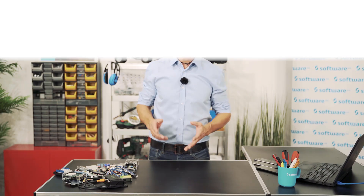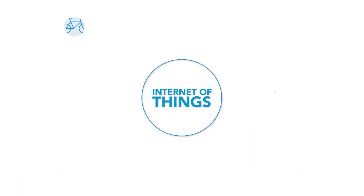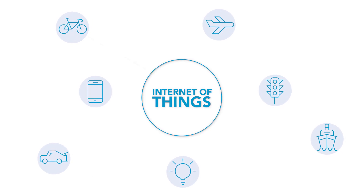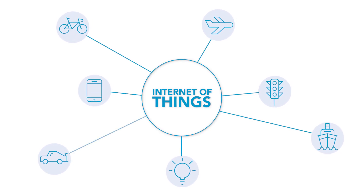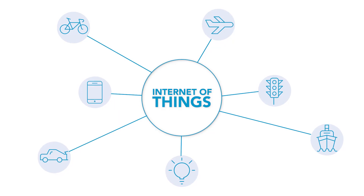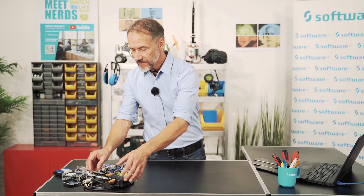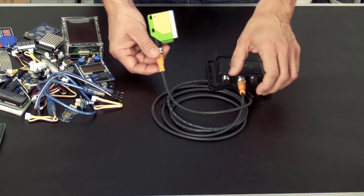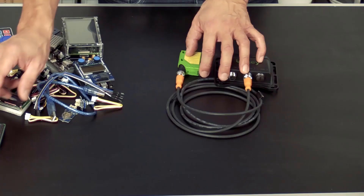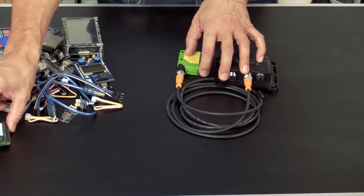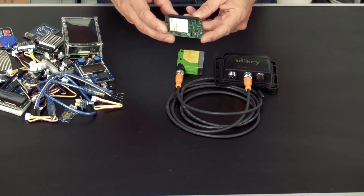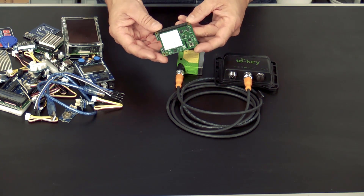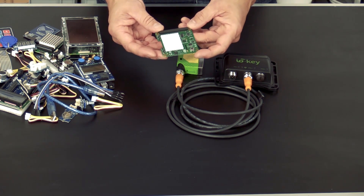The Internet of Things consists of many things surrounding us in our daily lives — things that generate and transmit data. Sensors and transmitters may look like this for professional applications, or in a much smaller format for research and education purposes, or for prototypes soldered onto a circuit board like this.